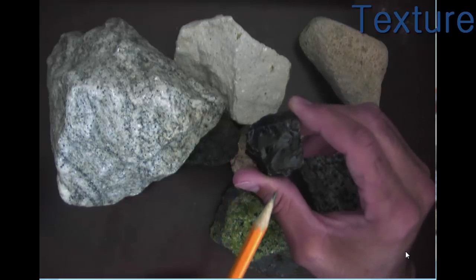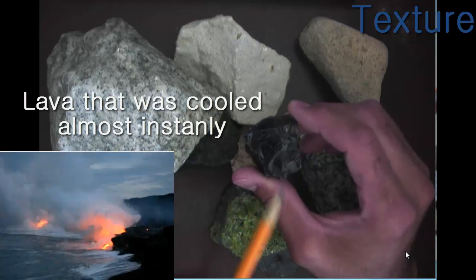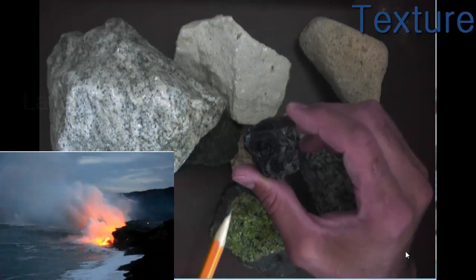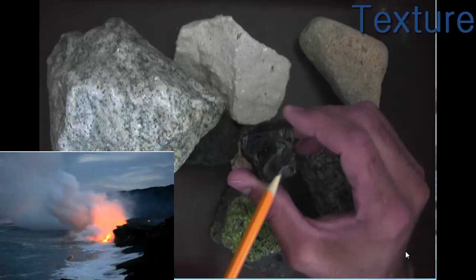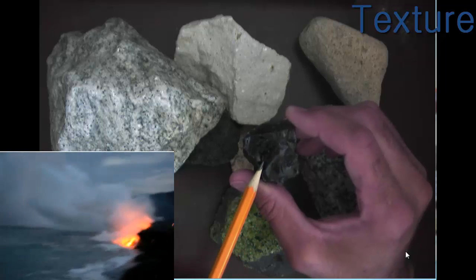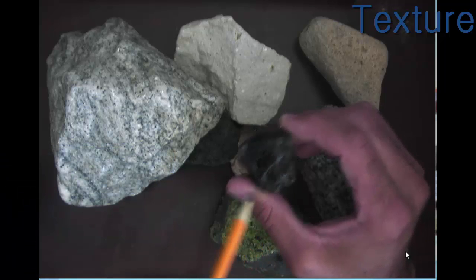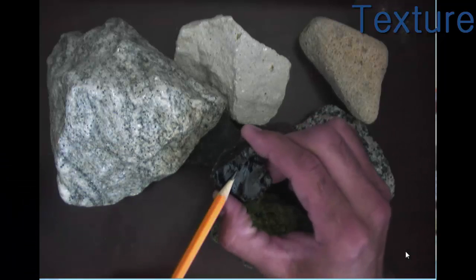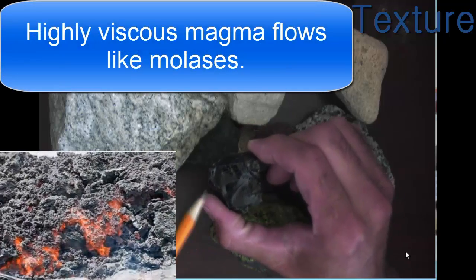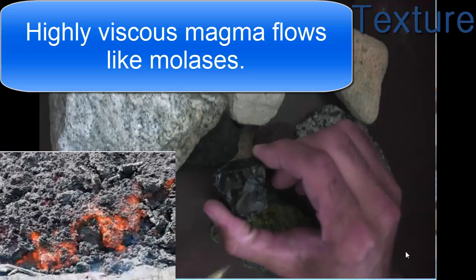If they're cooled extremely fast, if you see lava pouring out into the ocean, it hits the water and it quenches it quickly or almost instantaneously, that locks the atoms in place. That would cause a glassy texture like this. Or you have a very viscous magma that doesn't allow the atoms to move around so that they can arrange themselves into those crystals.